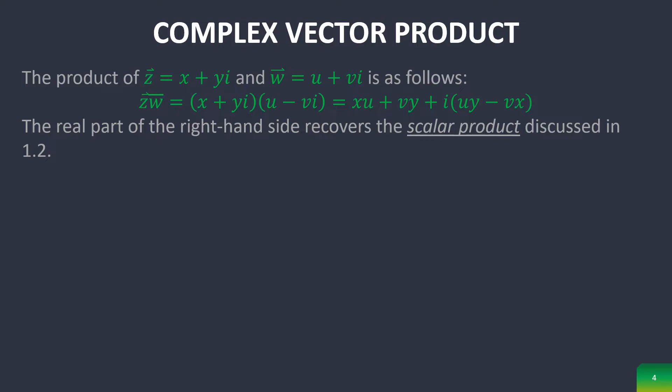If you remember that the scalar product was actually of the form, using Einstein's summation convention, it was x_i y_i, and that equals x_1 y_1 going up to x_n y_n.